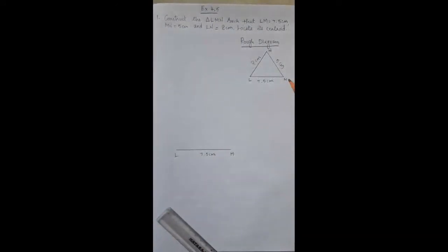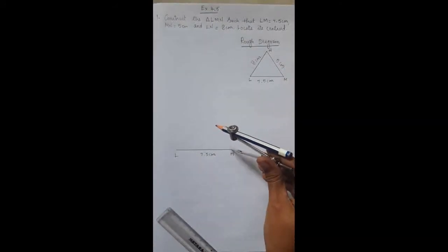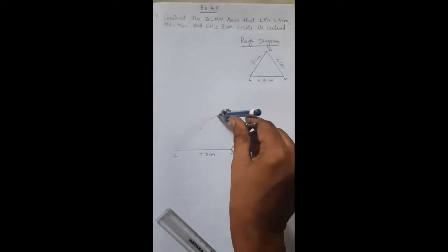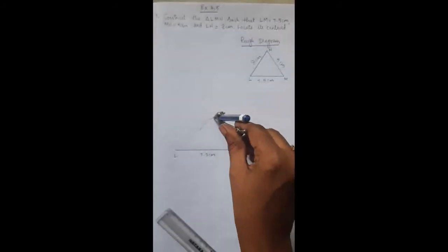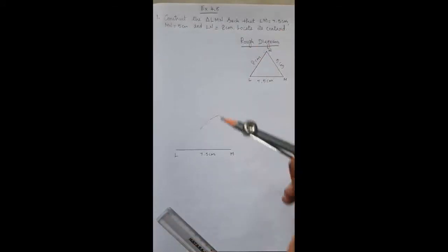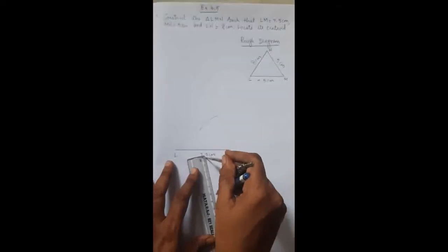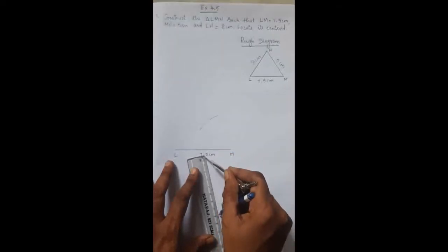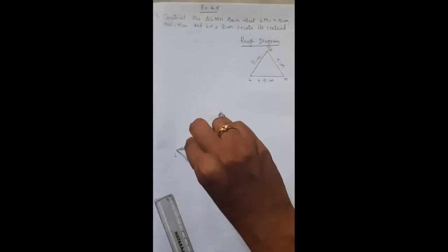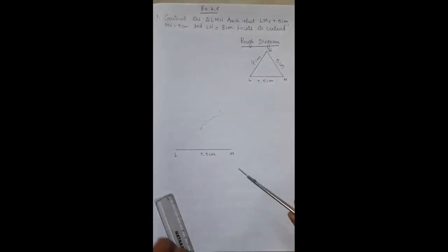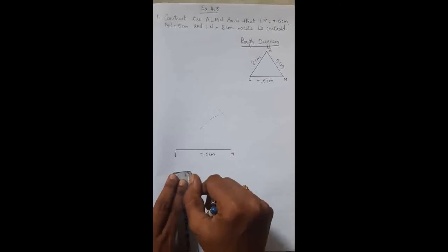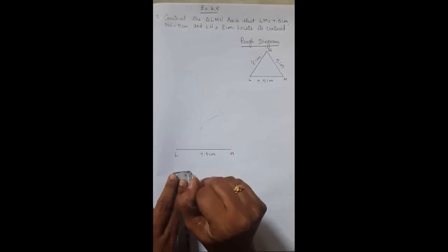From M, make an arc for 5 cm. Next, LN is 8 cm, so measure the compass for 8 cm. From L, make an arc for 8 cm. If the arcs are not intersecting, just extend the arc.